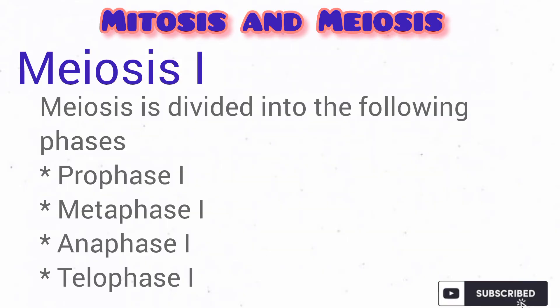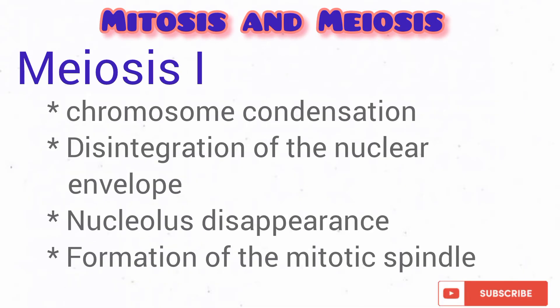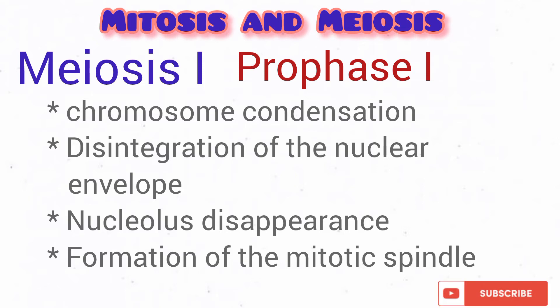Meiosis 1 is divided into prophase 1, metaphase 1, anaphase 1, and telophase 1. Prophase 1 of meiosis is similar to the prophase of mitotic division in that the nuclear membrane disappears, the chromosomes condense, and there is disappearance of the nucleolus.